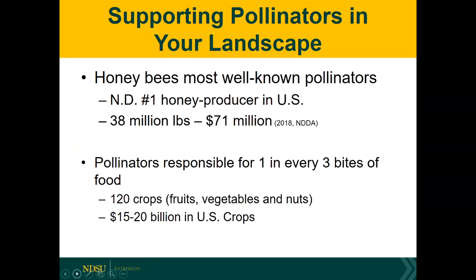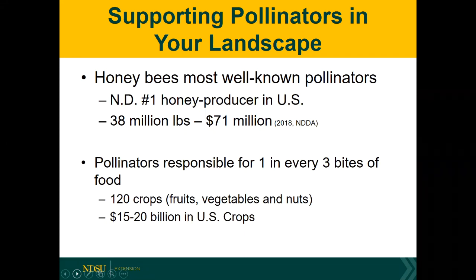Honeybees are probably our most well-known pollinators, and North Dakota happens to be the number one honey-producing state in the United States. In 2018, according to the North Dakota Department of Agriculture, we produced 38 million pounds of honey valued at roughly 71 million dollars. According to various sources, pollinators are generally responsible for one in every three bites of food that we eat, including 120 different crops — mainly fruits, vegetables, and nuts — and contribute approximately 15 to 20 billion dollars in U.S. crops.